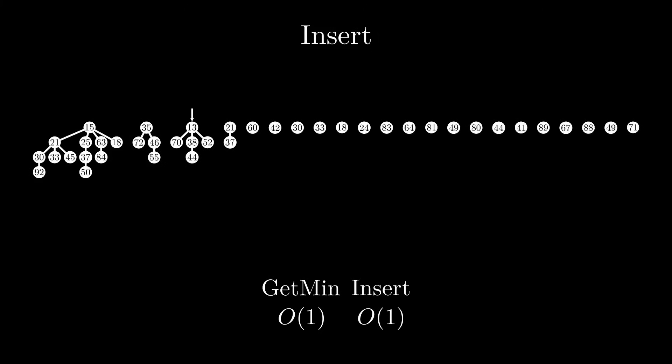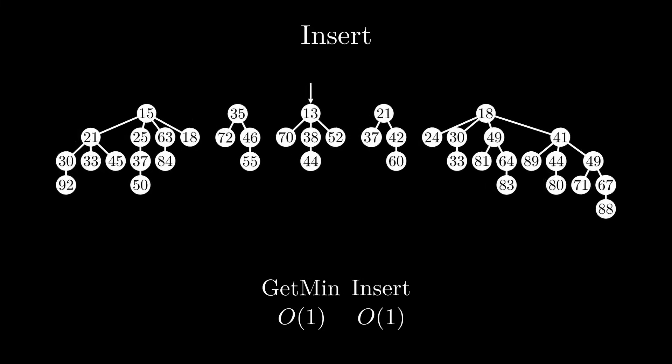After adding a lot of elements, the next ExtractMin call will need to check all of these nodes, because they're all potential candidates for the next minimum. But here comes the first clever idea of Fibonacci heaps: if the next ExtractMin call after a lot of inserts is slow, why not use that extra time to do some cleanup? We need to iterate over the entire root list anyway to find the next minimum, so while doing that, let's merge single nodes and small trees to form bigger trees. This reduces the number of trees in the root list significantly and makes subsequent ExtractMin calls a lot faster.